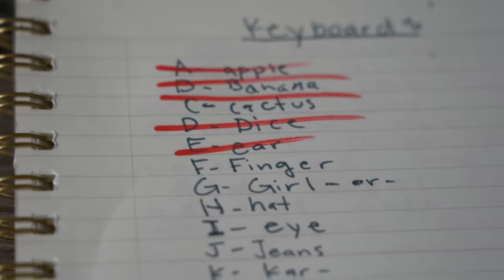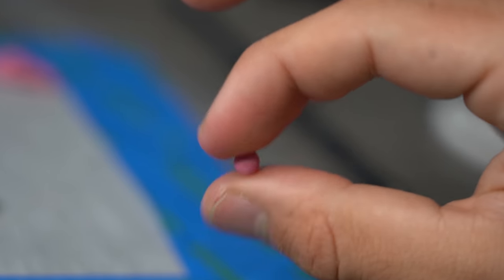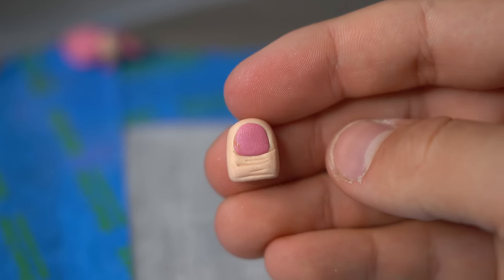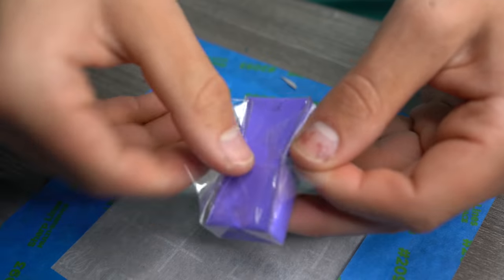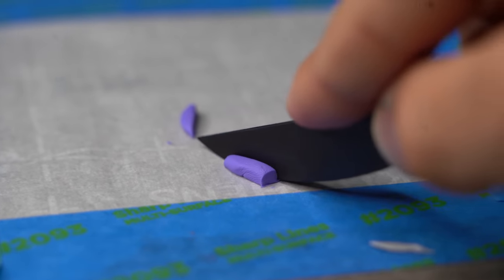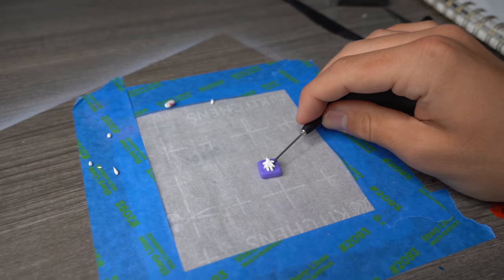Next on the list is finger. I rolled out a ball of peach, a ball of pink, made a little hole for the fingernail, put that in, and boom, there's my little chopped up finger. Now for G, I'm doing a girl. I took some purple, cut it into a square, and cut out a little shape of a girl. This is like the emoji on the iPhone or on a bathroom, and boom, there it is.